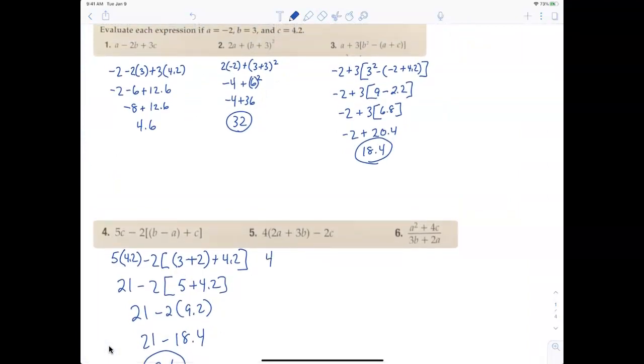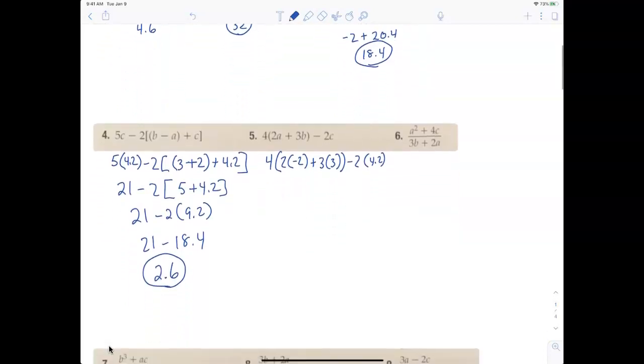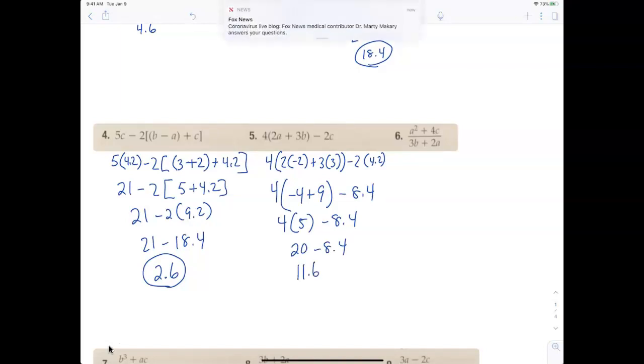Number 5: 4 times parentheses 2 times negative 2 plus 3 times 3 minus 2 times 4.2. 4 times negative 4 plus 9 minus 8.4, 4 times 5 minus 8.4, 20 minus 8.4, 11.6.